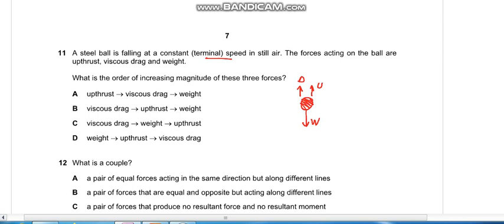Upthrust is because of the pressure difference between the top and bottom surface. A steel ball would have a smaller difference in height, so that would be the least. Upthrust is the least in magnitude and weight would be the greatest, so A is the appropriate answer. Thanks for watching this video. Do like and subscribe my channel for more videos. Thank you.